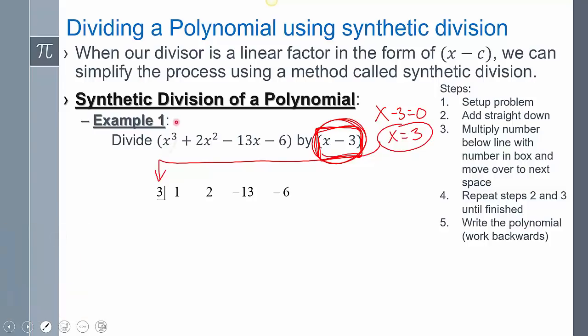Then you take the coefficients: one, two, negative thirteen, negative six, and you line them up that way. Now just like with polynomial long division, if there's a space, if there's a gap, you have to put a placeholder.